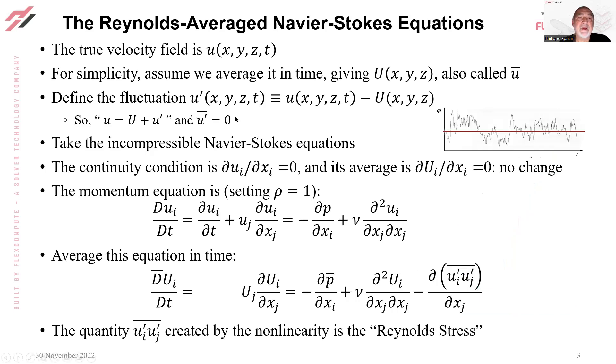So the equations. The true velocity field is three-dimensional and time-dependent; this is the one we would have in a direct numerical simulation. For simplicity, assume we average it in time, giving U(x,y,z), also called the mean velocity. We define the fluctuation U(x,y,z,t) ≡ u(x,y,z,t) - U(x,y,z).